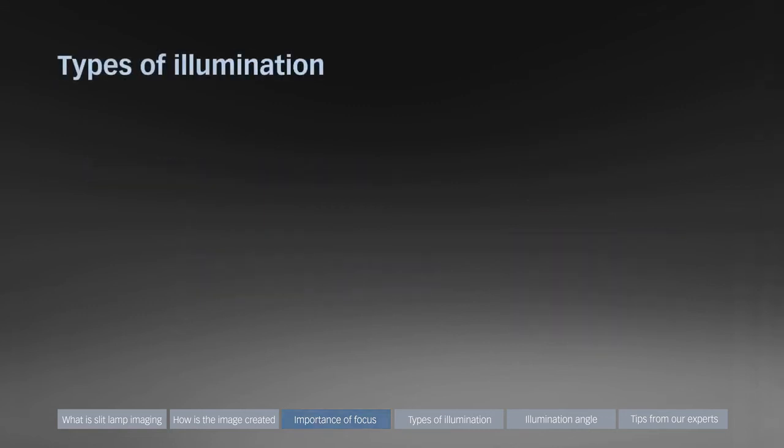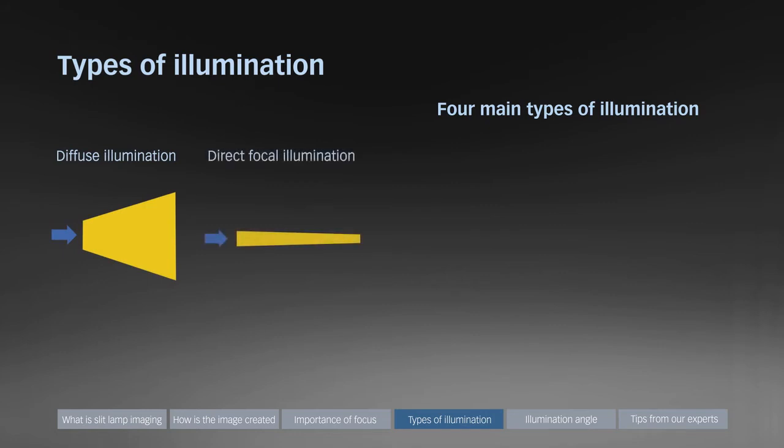This section gives an overview of four main types of illumination: diffuse illumination, direct focal illumination, direct focal fine slit illumination, and retro illumination.